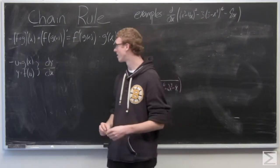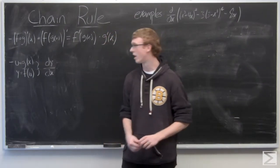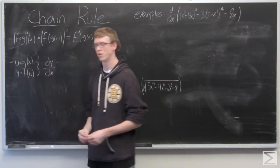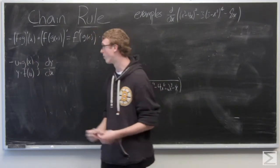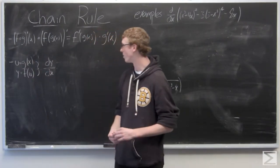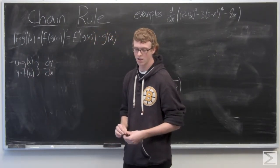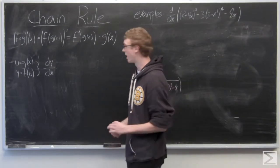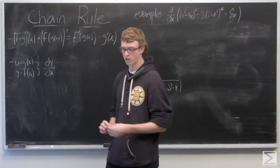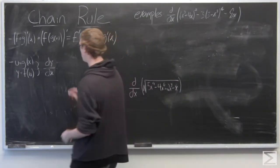That's kind of how I like to think of it. So say we have two functions: u equals g of x and y equals f of u, and we want dy over dx. Well we simply have dy over du times du over dx.